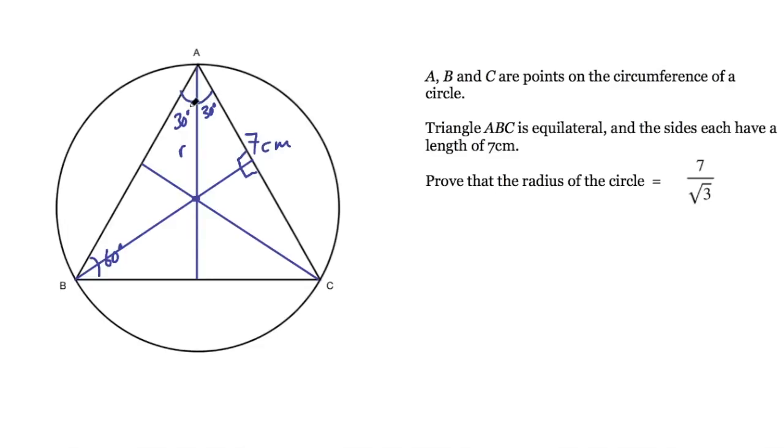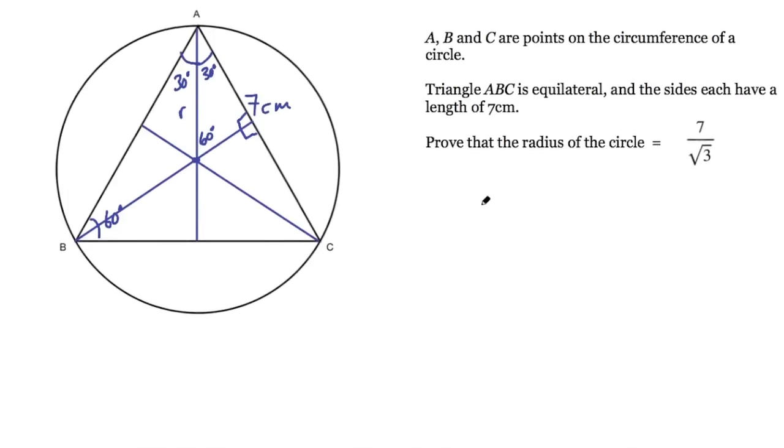Something else I can state is because this is a 30 degree angle and this is a 90 degree angle, this angle in here must be a 60 degree angle. So what I have here is a right angle triangle with an angle of 30 degrees and an angle of 60 degrees. I actually know something about the ratio of the sides of a right angle triangle like this.